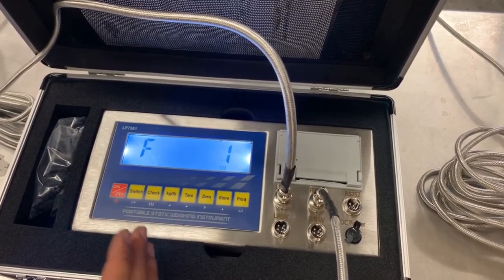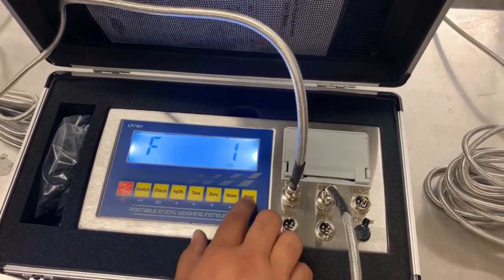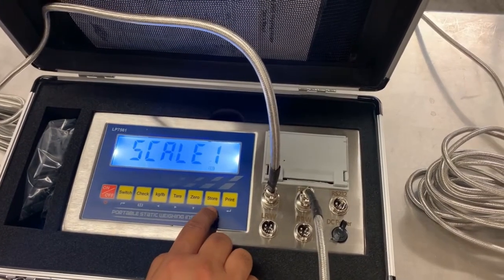So you have your F1 done. You set up your capacity and accuracy, how many pads, and how you want to calibrate. From here you'll go to F2 and press print. You get to choose which scale you want to calibrate.